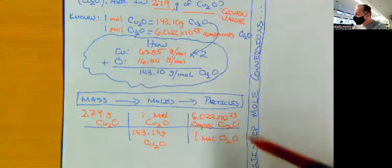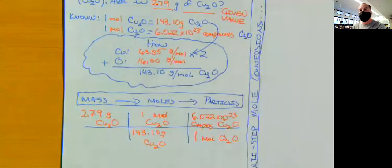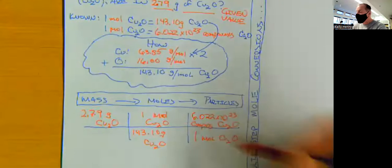And we also know that one mole of copper one oxide is composed of 6.022 times 10 to the 23rd compounds of copper one oxide, right? Avogadro's number. So we know that there's always 6.022 times 10 to the 23rd particles. In this case, our particle is a compound in one mole.